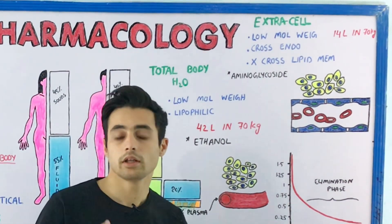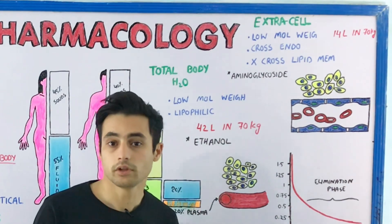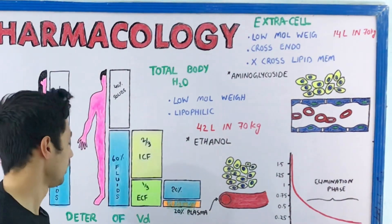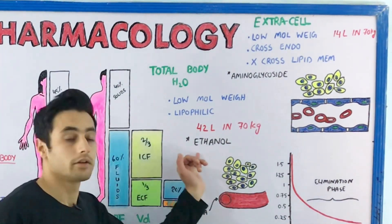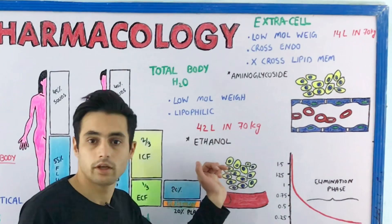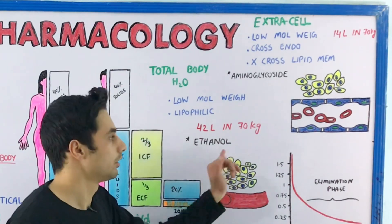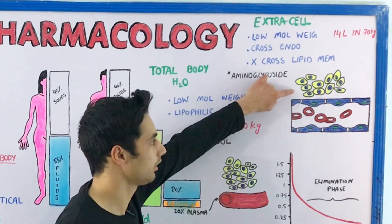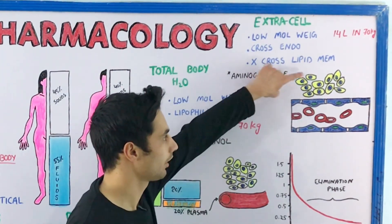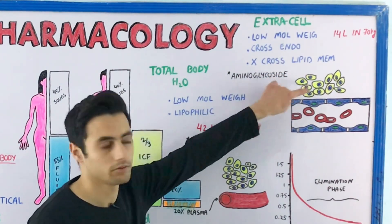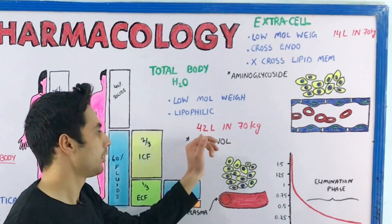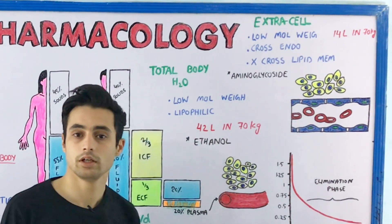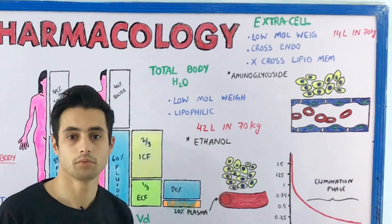Some drugs are distributed in every compartment — in plasma, extracellular fluid, as well as in the intracellular fluid. Ethanol is distributed in the plasma, the interstitium, and the intracellular fluid. It is about 42 liters in a 70 kg man.